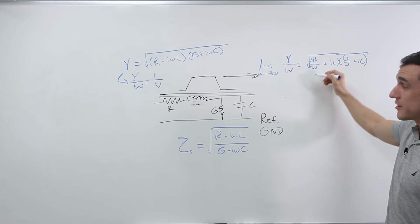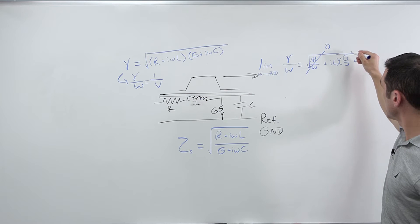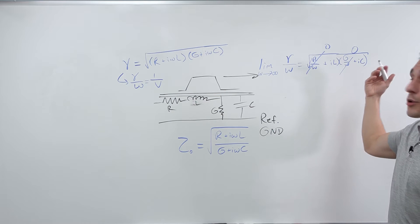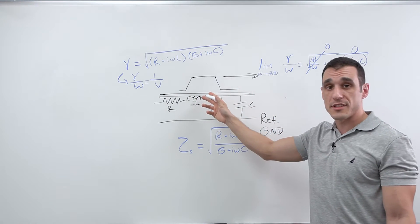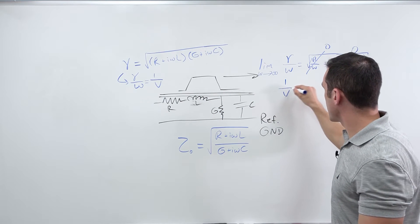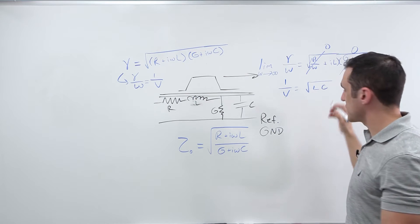Well, I'm going to have R divided by infinity. So this goes to zero. I have my G term divided by Omega, which goes to zero. And so in a perfect world where we don't have any problems with copper roughness or skin effect, I get back to one over my velocity is just square root of L over C.